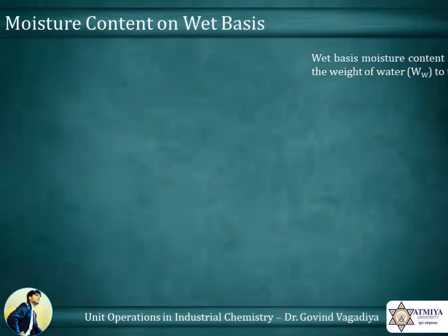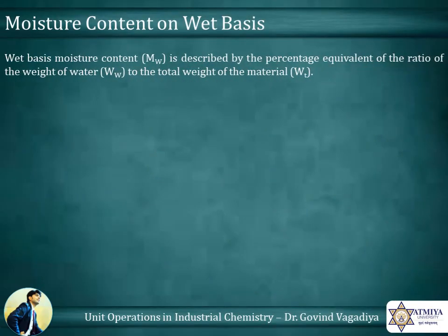Wet basis moisture content, MW, is described by the percentage equivalent of the ratio of the weight of water, WW, to the total weight of the material, WT.